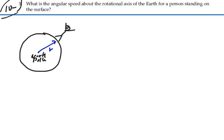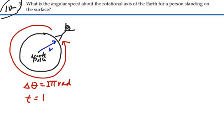So they're going to travel all the way around the Earth over the course of one day. They will travel an angle of 2π radians in a time of one day.